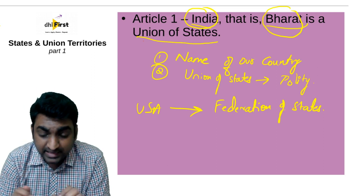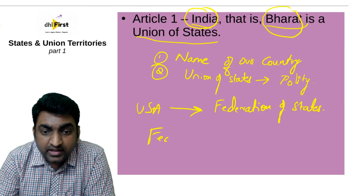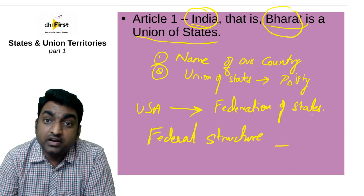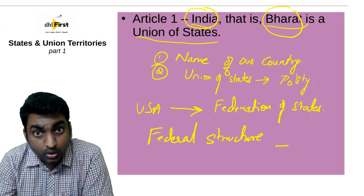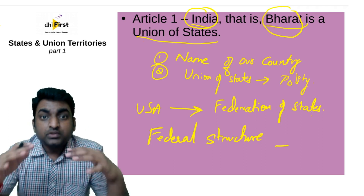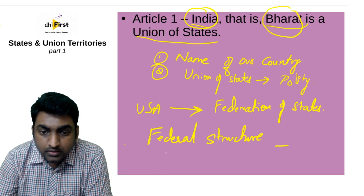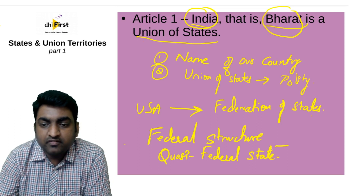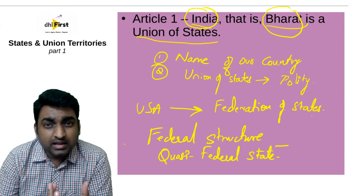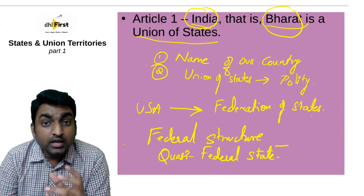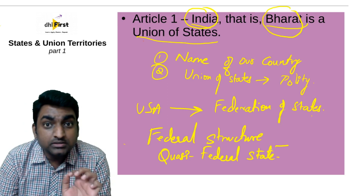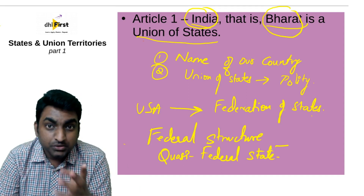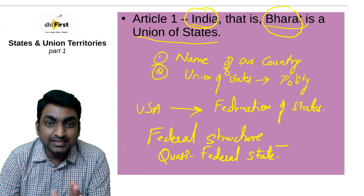Having said that, we do have a federal structure in our governance. Don't confuse federal structure with a federation of states — both are very different. We are not a federation of states, though we have a federal structure. In a bird's eye view, our polity is a quasi-federal state — a kind of federal system but with a unitary bias. These concepts were covered in the introduction to constitution videos; I would advise you to go through those for more clarity. This is about article 1.